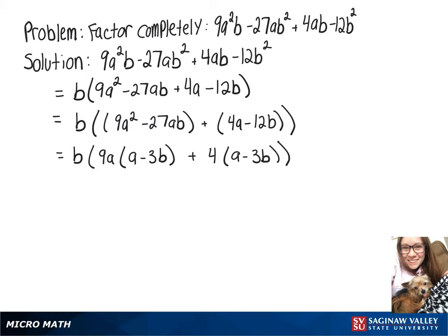Since (a - 3b) is part of both terms, we can factor that out. So we have b(a - 3b)(9a + 4).